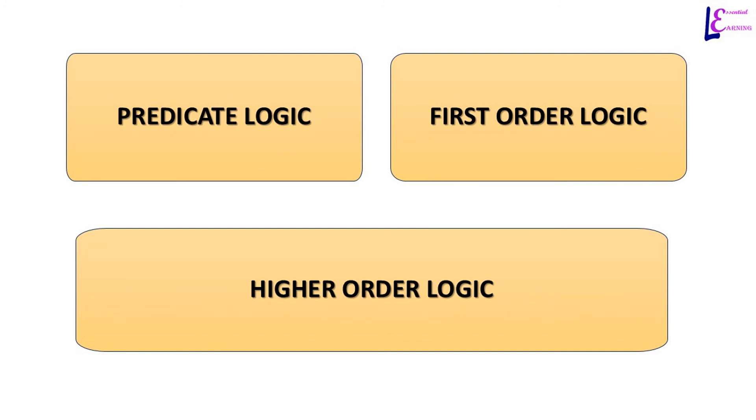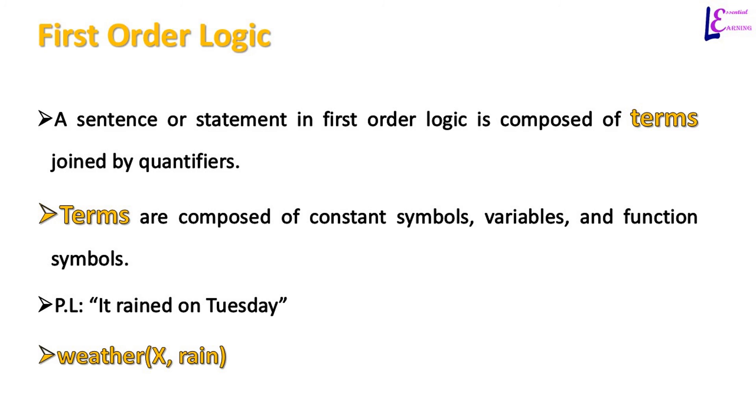Predicate in first order and higher order logic simply shows a relationship among the objects, constants or variables. In first order logic, a statement is not a straight sentence made of words. A sentence in first order logic is made of terms and quantifiers. Terms are composed of constants, symbols, variables and function symbols.